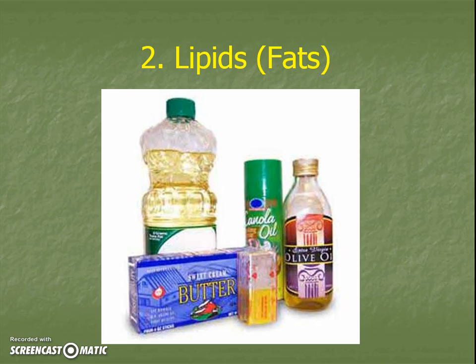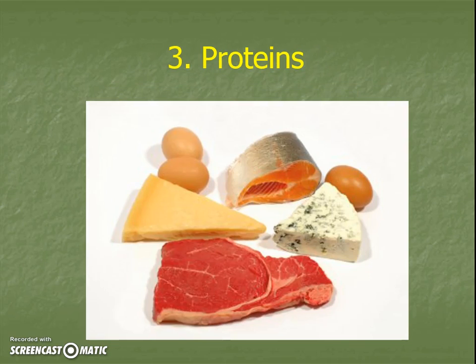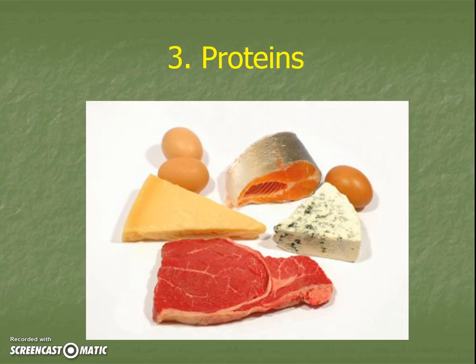Our third type of macromolecule category is proteins. This is going to be your animal meat — the muscles from animals and from fish. Some things like eggs and cheese are going to have some fat content but are mostly also going to have some protein in them. Beans and nuts are also really good sources of protein. We'll learn more about the job of these different categories another day, but this is our third category — protein.